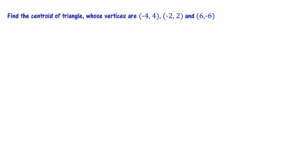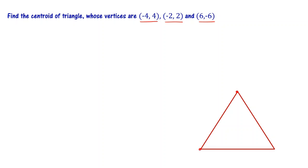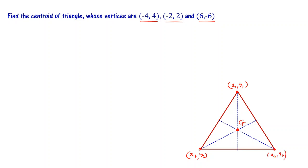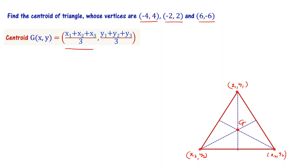Find the centroid of the triangle whose vertices are (minus 4, 4), (minus 2, 2), and (6, minus 6). A triangle has three vertices and three sides. If you draw a line connecting each vertex with the center of the opposite side, all three lines intersect at the centroid. The formula for the centroid is: x₁ plus x₂ plus x₃ divided by 3, comma y₁ plus y₂ plus y₃ divided by 3.